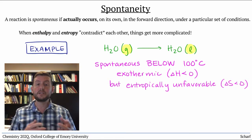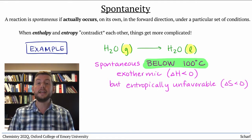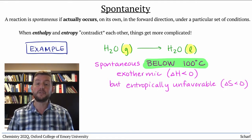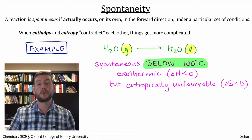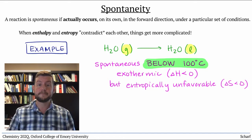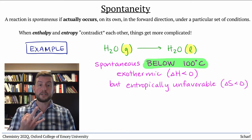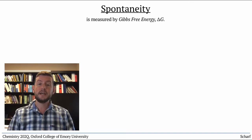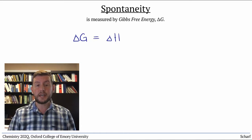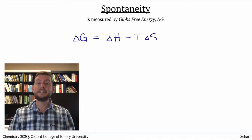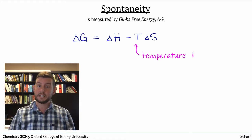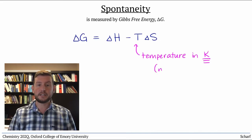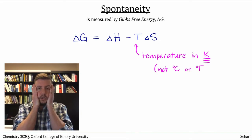These processes illustrate that temperature, in addition to enthalpy and entropy, is a determining factor in whether a process is spontaneous or not. These three factors come together to describe something called the Gibbs free energy, delta G, of a process or reaction. Delta G equals delta H minus T times delta S. It's important to note that T in this equation must be in Kelvin, not degrees Celsius or Fahrenheit.